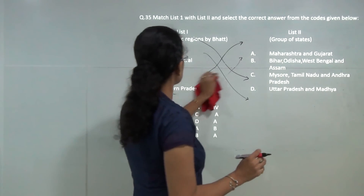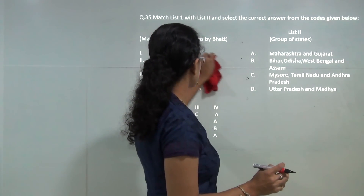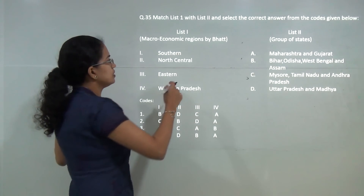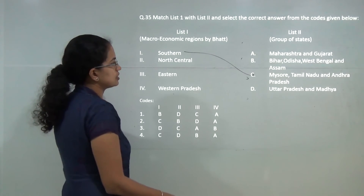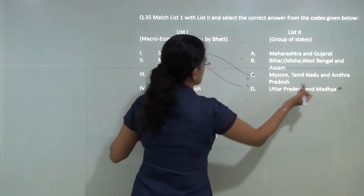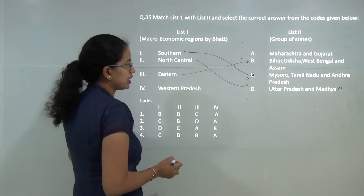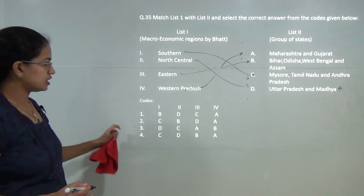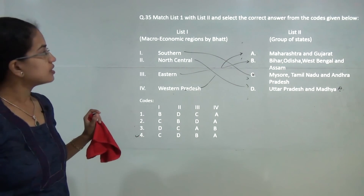Next question on south regions. Even if you do not know Bhat's classification, you can answer this by basic knowledge of the map of India. Southern regions include Mysore, Tamil Nadu, Andhra Pradesh. North-central regions include Uttar Pradesh and Madhya Pradesh. Eastern areas include Bihar, Odisha, West Bengal and Assam. Western regions include Maharashtra and Gujarat. So C, D, B and A would be the correct answer — option 4.